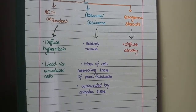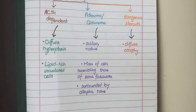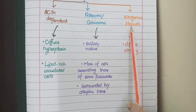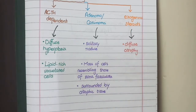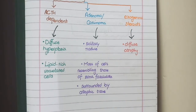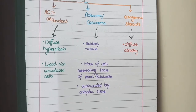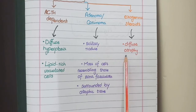If Cushing syndrome is due to exogenous steroids, these exogenous steroids signal the pituitary to stop secreting ACTH, as there is no further need for it. This lack of ACTH causes diffuse atrophy of the adrenal glands.